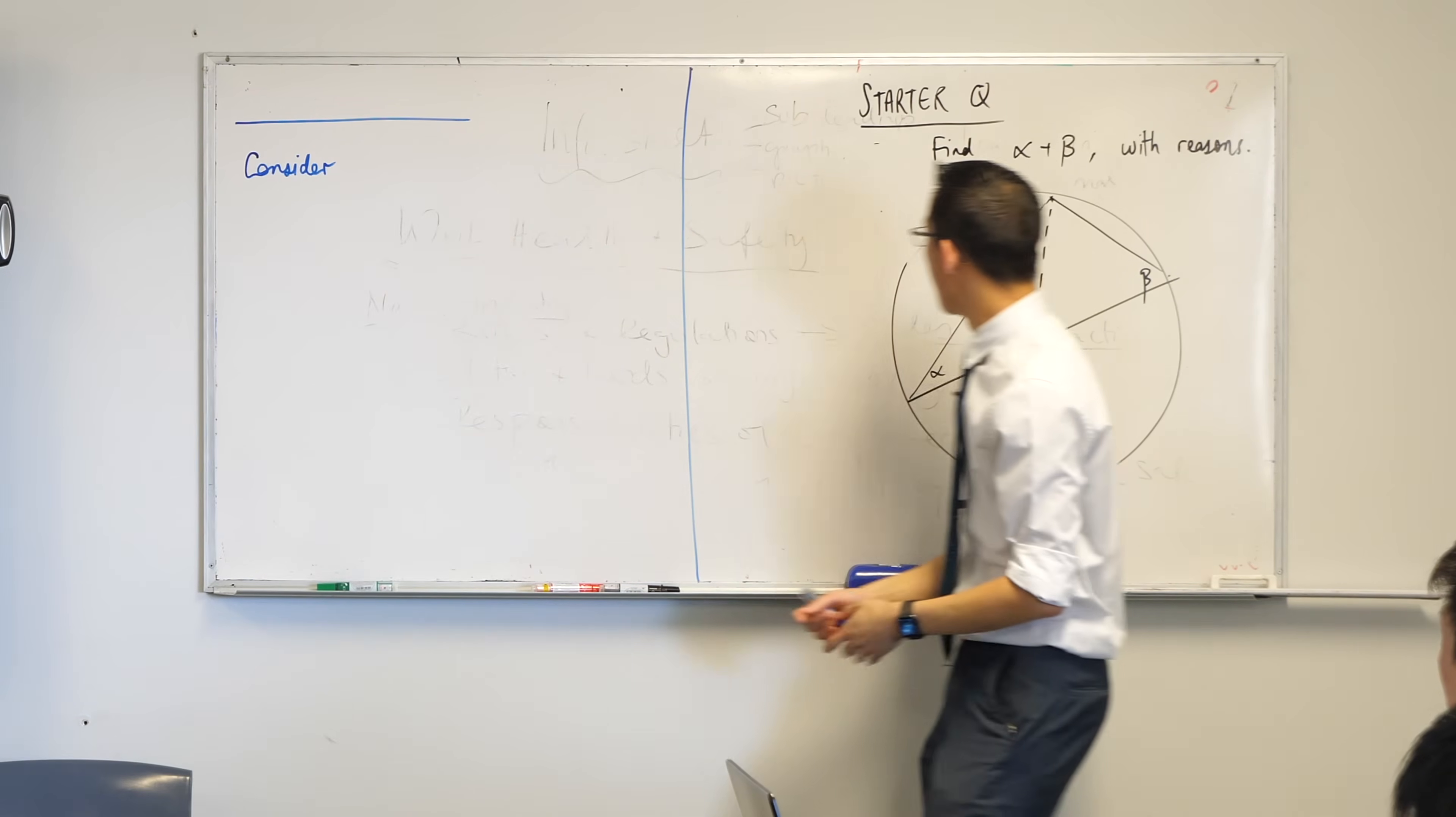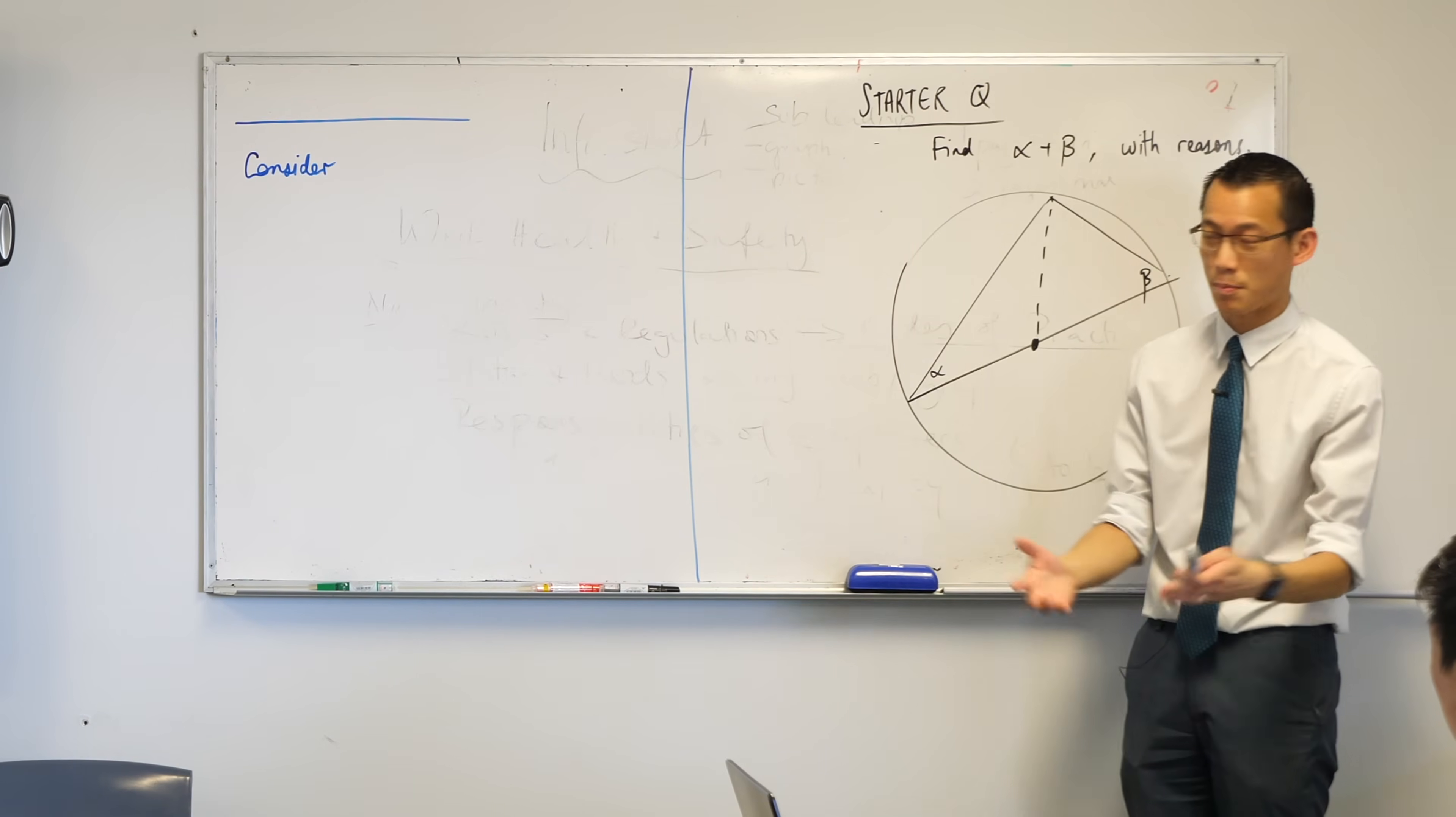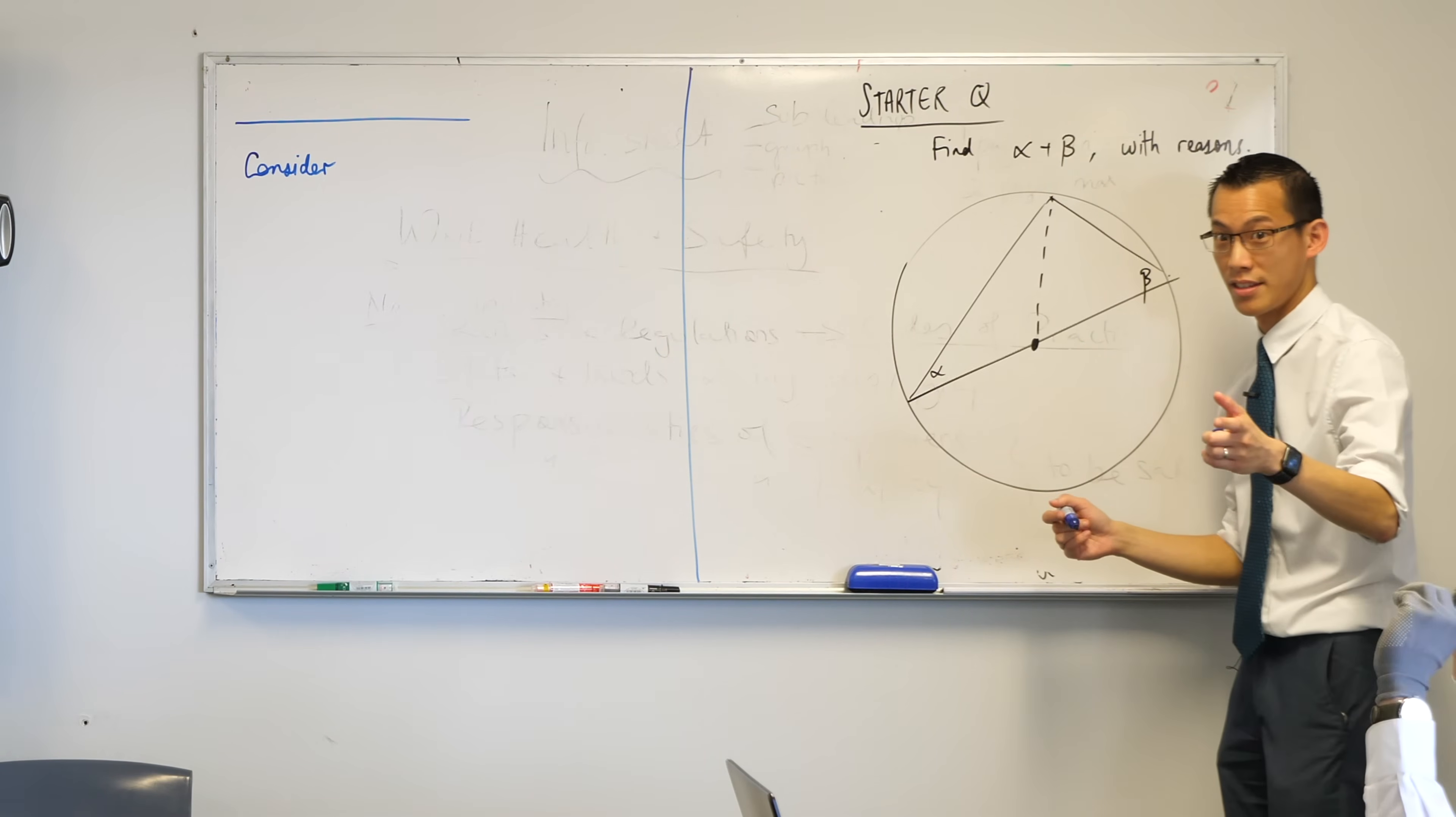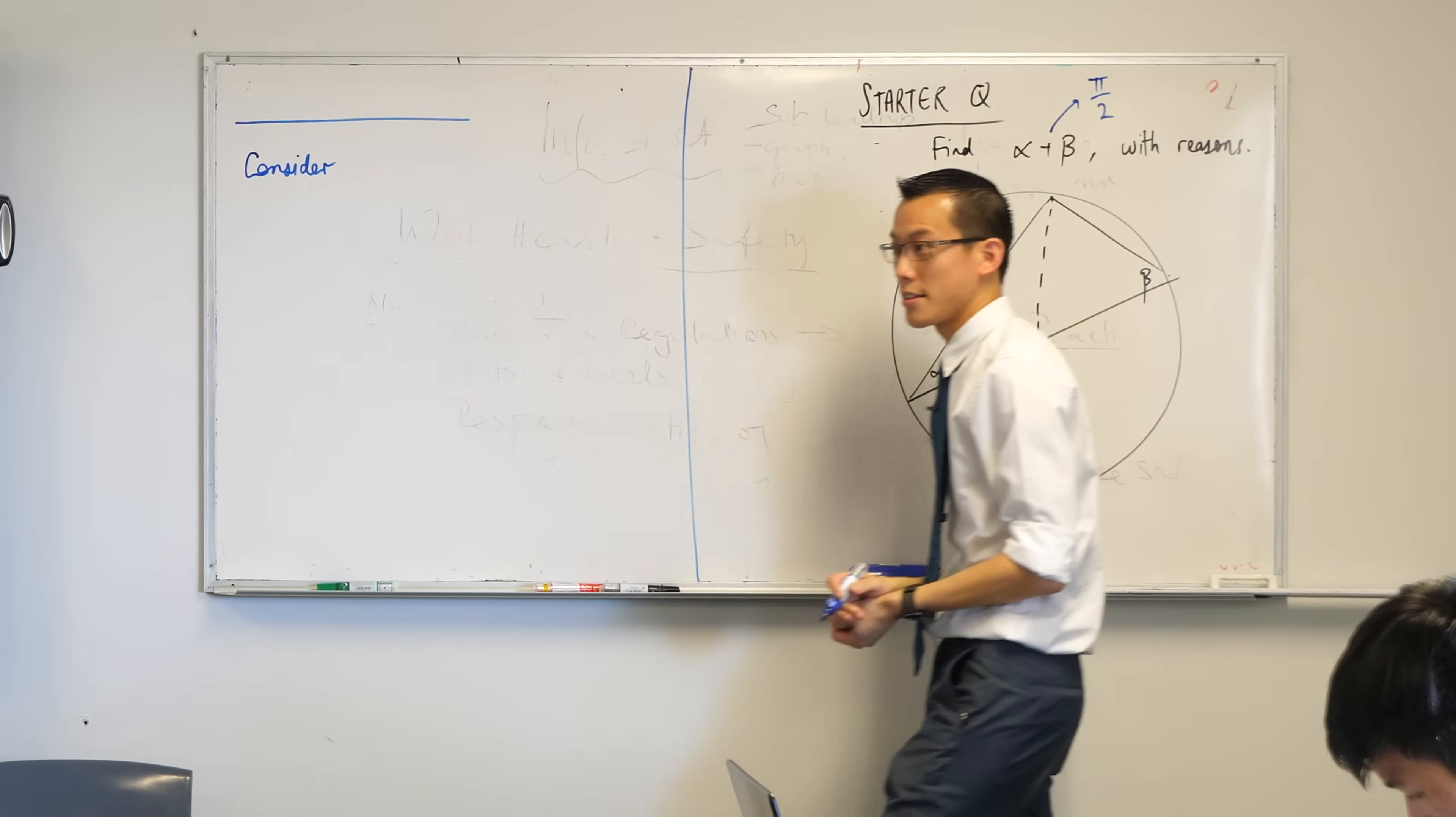Can someone tell me, and by the way, you won't see any degree symbols here, so hand me an answer in radians, please. Can anyone tell me what alpha plus beta is actually equal to? Pi over 2. Pi over 2 is the correct answer.